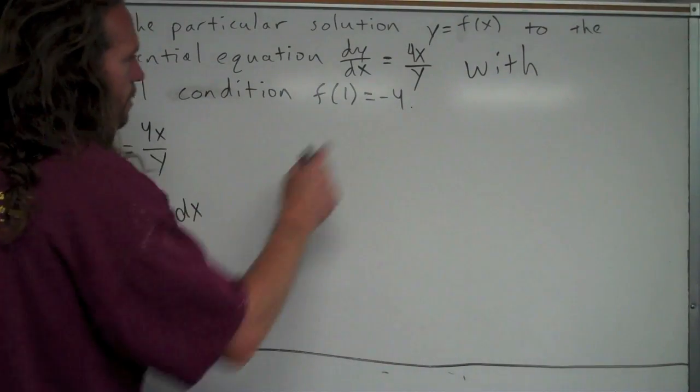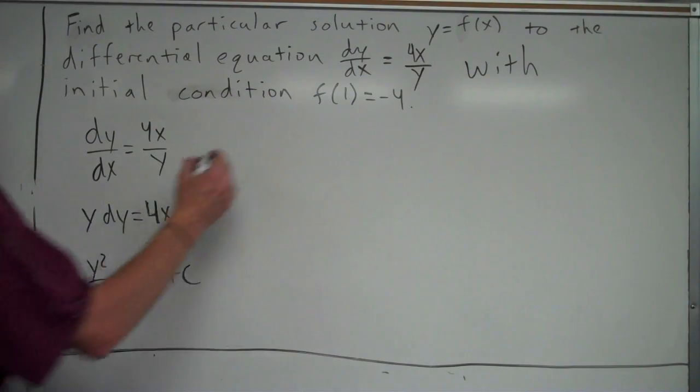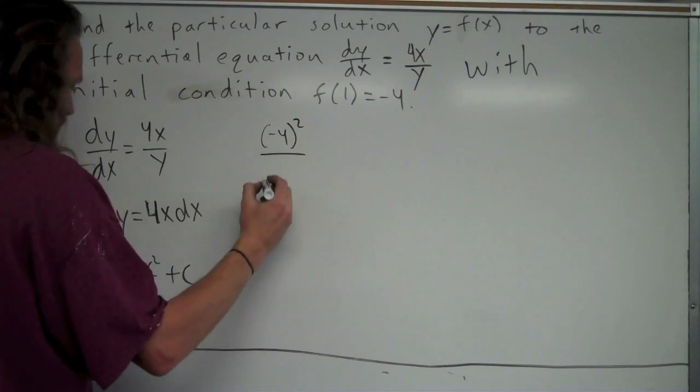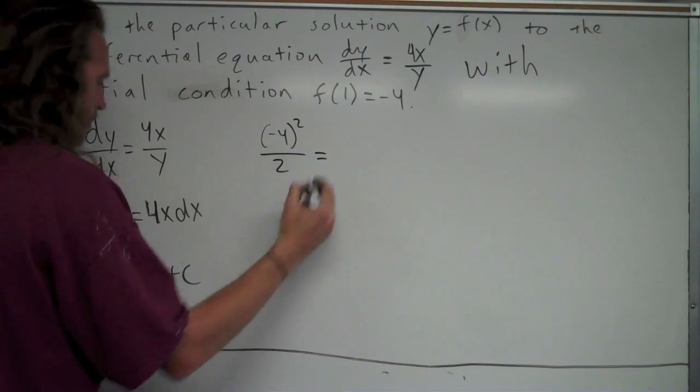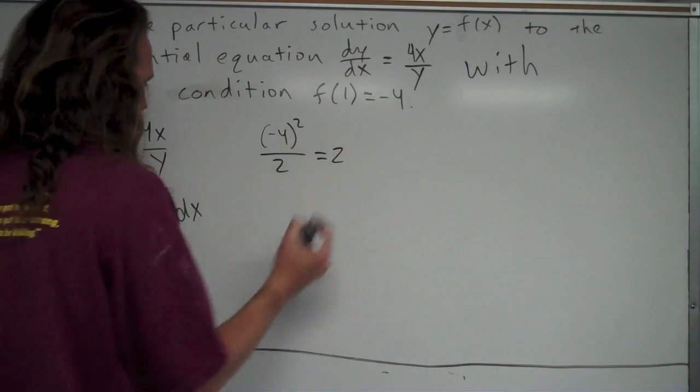So I'm going to plug in my initial condition of 1, negative 4 to figure out what c is. I'm going to plug 1 in for x and negative 4 in for y. So when I plug in negative 4 for y, it's going to be negative 4 squared over 2 equals, and 4 over 2 is just 2. So I'm just going to write that as 2 times x squared.